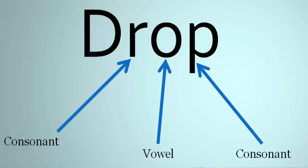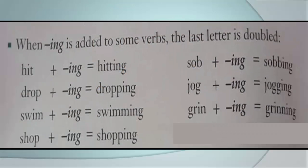Look at the verb 'heat': t is consonant, i is vowel, h is consonant, so the last t will be doubled and we add ing — heating. 'Drop': p consonant, o vowel, r consonant, so p will be doubled and then ing. 'Swim': last m will be doubled and then ing — swimming. 'Drop': p consonant, o vowel, h consonant, so last p will be doubled and then ing.